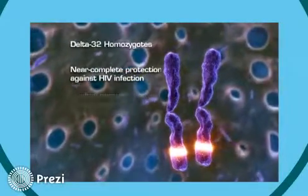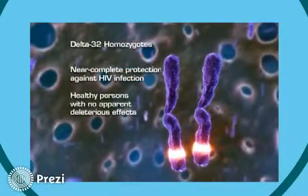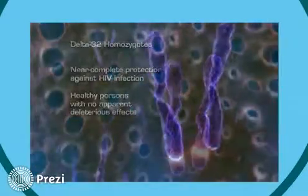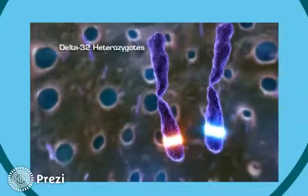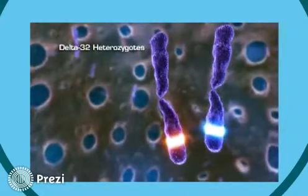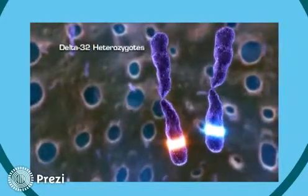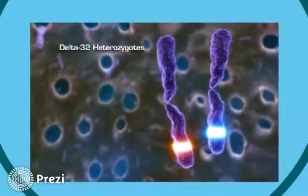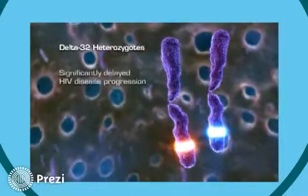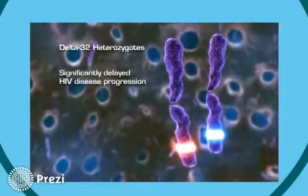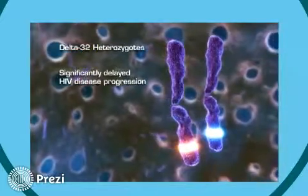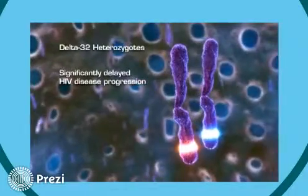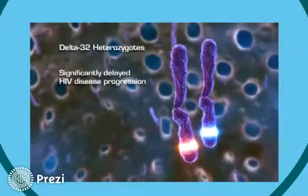Delta 32 homozygosity appears not to be associated with any significant deleterious effects. Delta 32 heterozygotes inherit one copy of the CCR5 Delta 32 variant from one parent and a normal form of the CCR5 gene from the other parent. Delta 32 heterozygotes can become infected with HIV, but disease progression is significantly delayed compared to those who have two normal copies of the CCR5 gene.